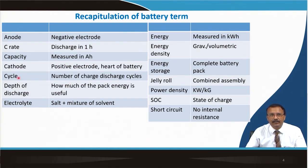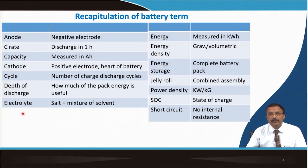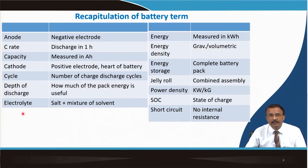The heart of the battery is the cathode (positive electrode) because its capacity controls the total battery capacity. Number of cycles is how many times you can charge and discharge the battery before its original capacity falls to 85 percent. For a good cell, it should withstand at least 500 cycles.